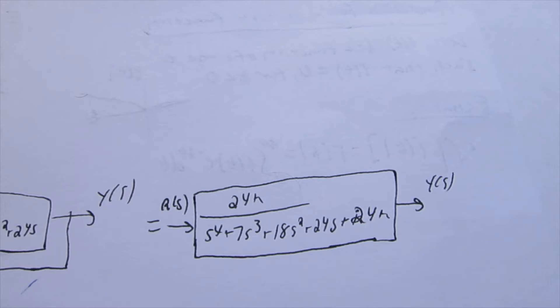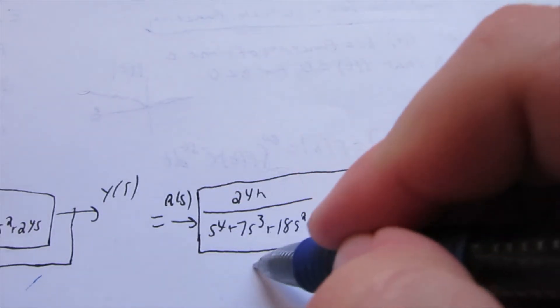So now, this is our final transfer function. And to determine if it's stable, or for what value of K that this is stable, we just need to look at that denominator. So we just want to look at this, and use our Routh-Hurwitz table.